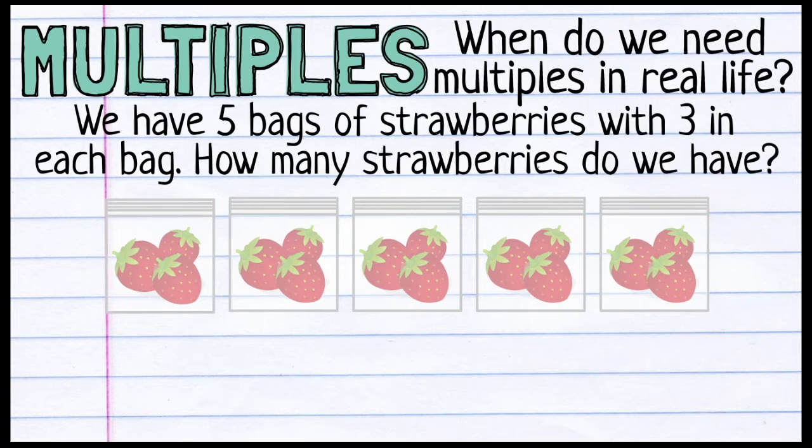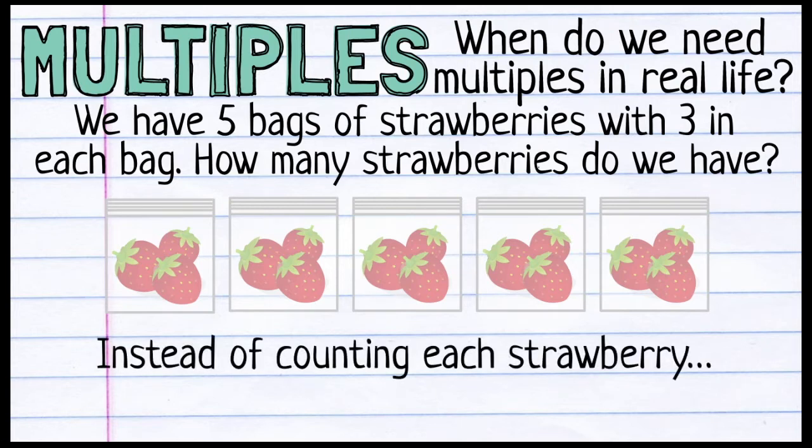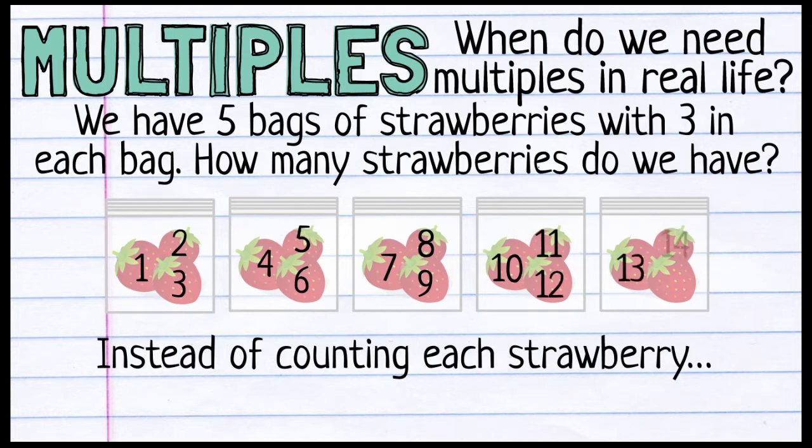How many strawberries do we have? Well, instead of counting each strawberry, 1, 2, 3, 4, 5, 6, 7, 8, 9, 10, 11, 12, 13, 14, 15. That's just not a very efficient way to count the strawberries.